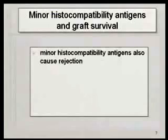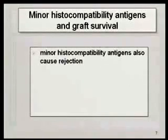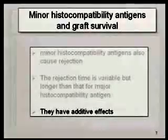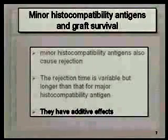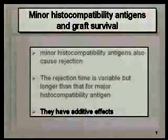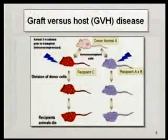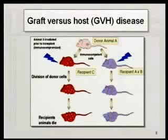Minor histocompatibility antigens also affect the fate of the graft. The more the diversity, the stronger the reaction and the quicker the rejection. They have an additive effect — if there is disparity at one antigenic locus, there will be a certain rejection time, but if there are two, three, or four disparities, rejection will be quicker.